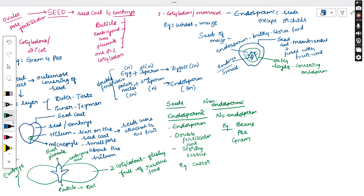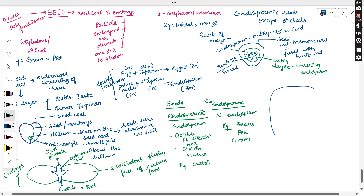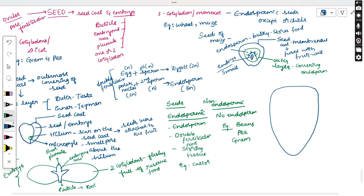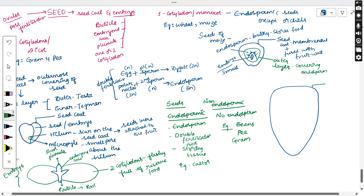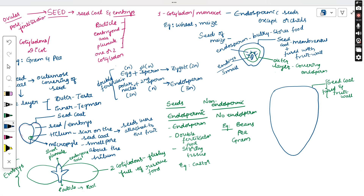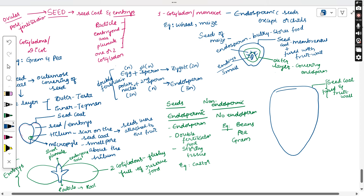The endosperm separates the embryo by a proteinaceous layer. Looking at the monocot seed structure — observable in wheat or rice grains — the outermost layer is the seed coat, which is completely fused with the fruit wall. Below this is a proteinaceous layer that separates the embryo, called the aleurone layer. Inside is the endosperm, since monocots are endospermic.